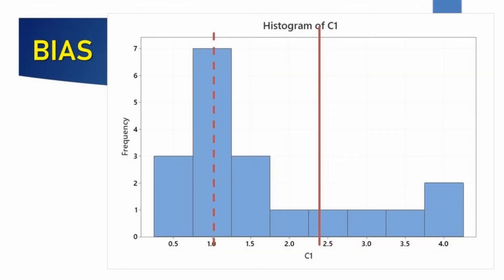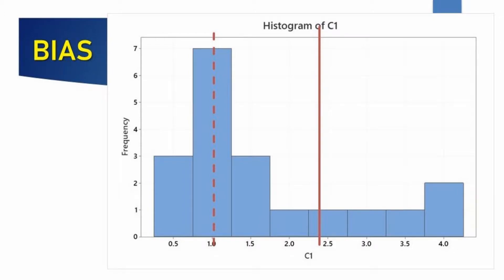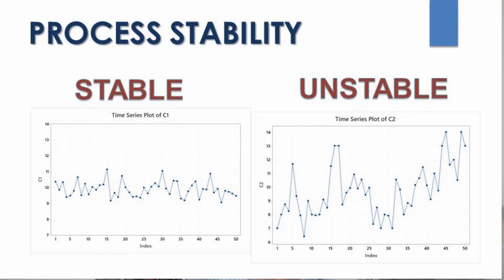What is stability? Stability is very important because our measurement system is going to have variation, but this variation needs to be constant. It cannot have ups and downs, cycles, or curvatures — it needs to be stable through time.